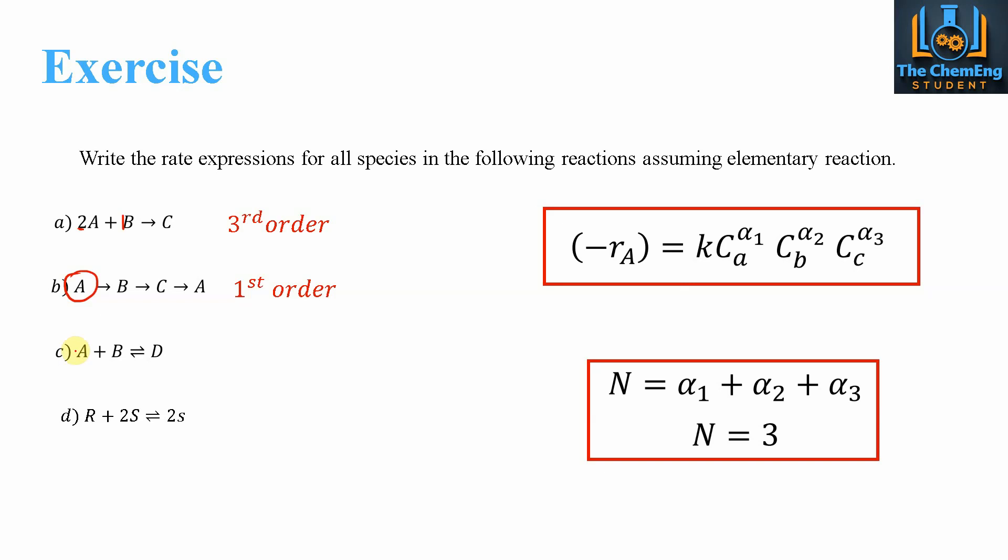For C, we have a stoichiometric coefficient of one here and one here. Although this is reversible, with respect to A, we have a second order reaction because we have one here and one here.